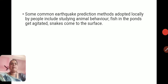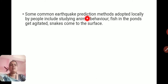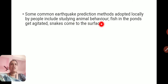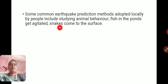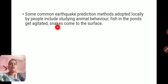Some common earthquake predictions: methods adopted locally by people include studying animal behavior. Fish in ponds get agitated. Snakes come to the surface because they feel vibrations on the ground. Snakes can sense earthquake seismic waves before they reach the spot and come out from underground to the surface. Fish in ponds also get agitated.